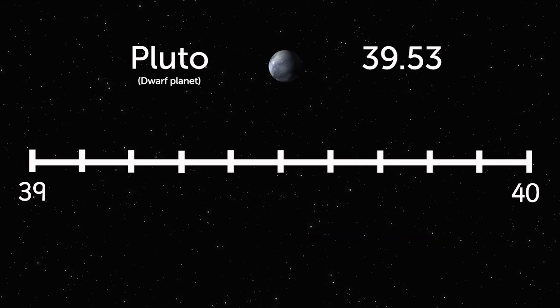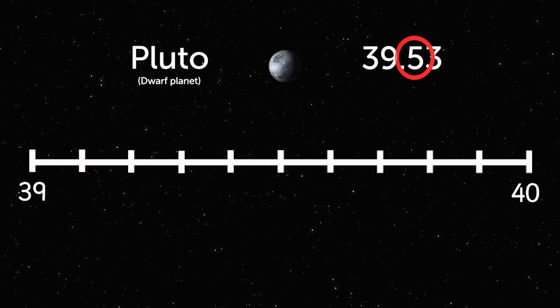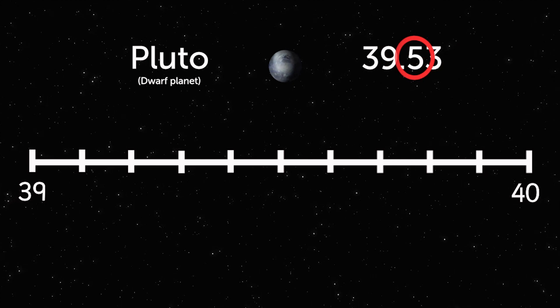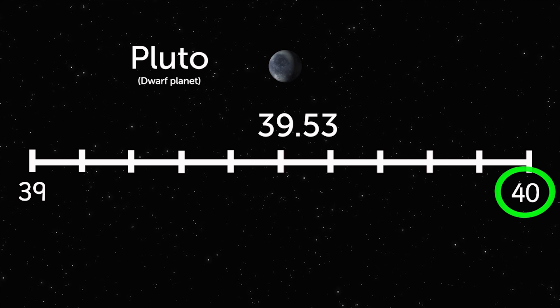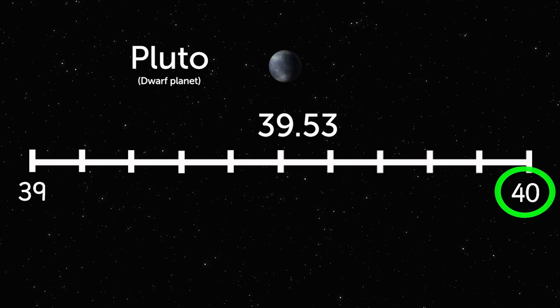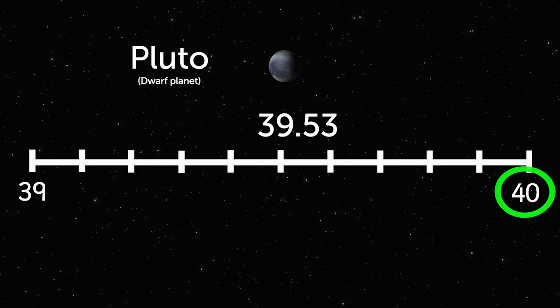39.53 has 5 in the tenths place, so you round it up to 40. Pluto is almost 40 AUs from the Sun.